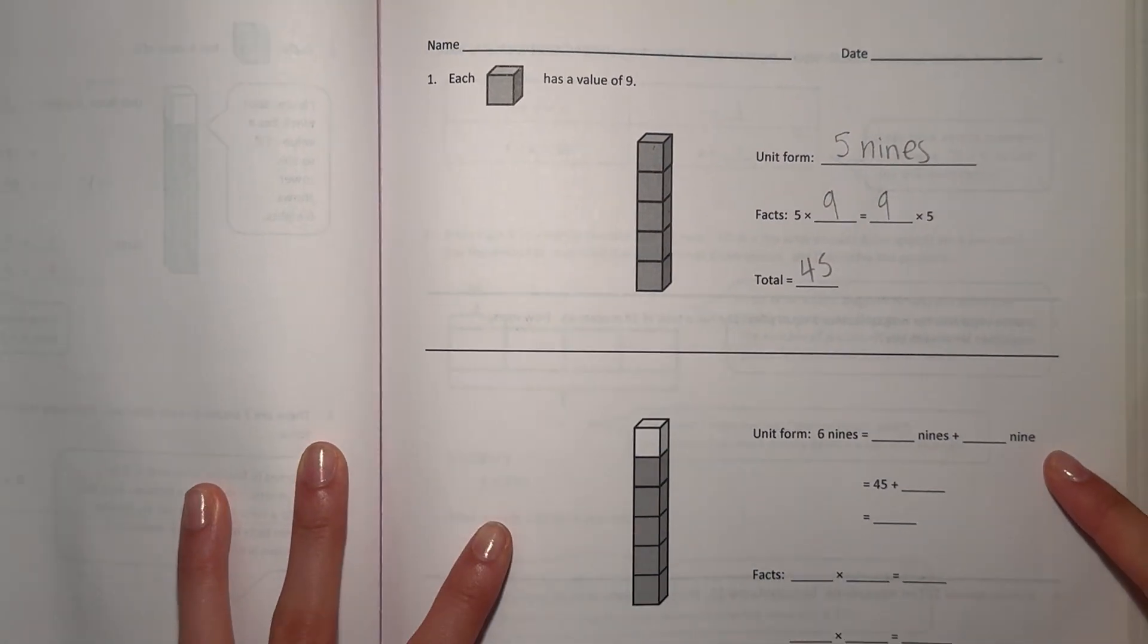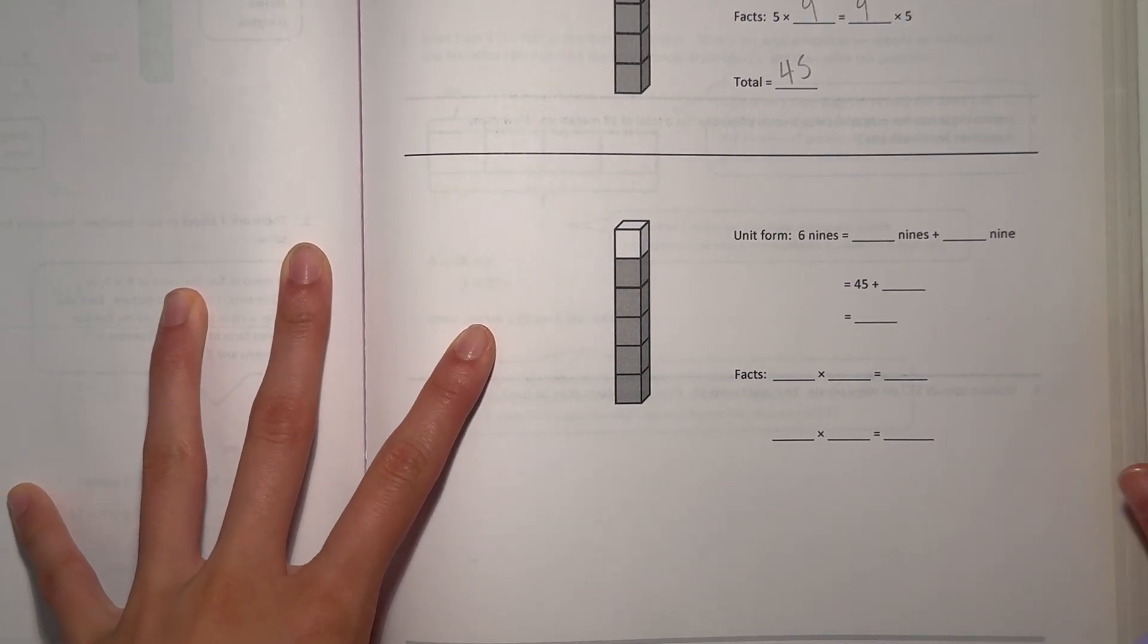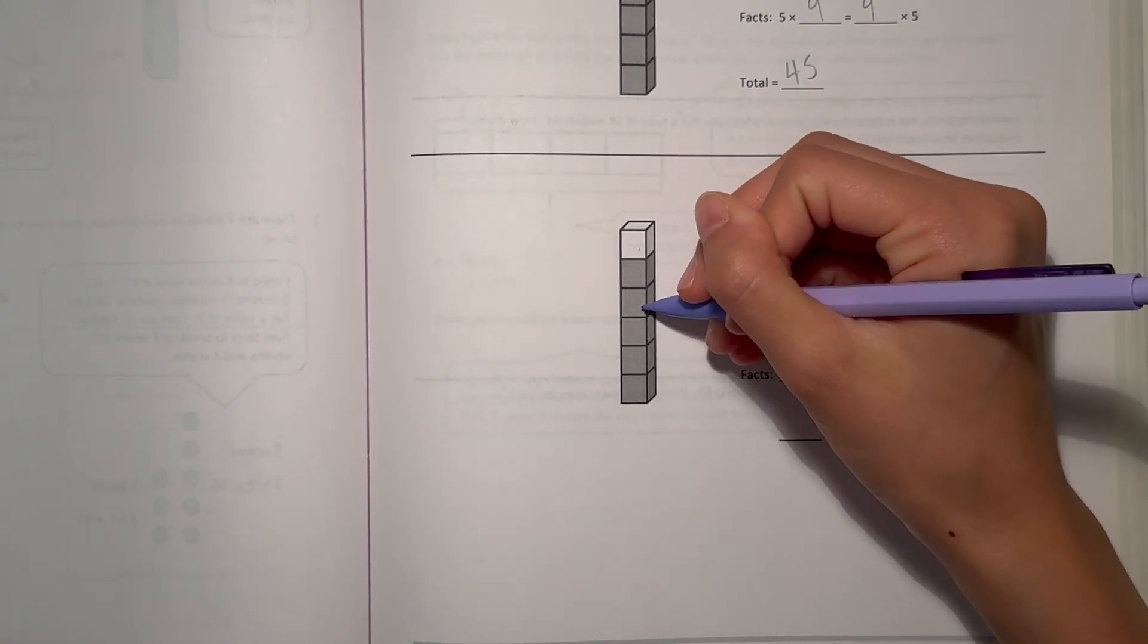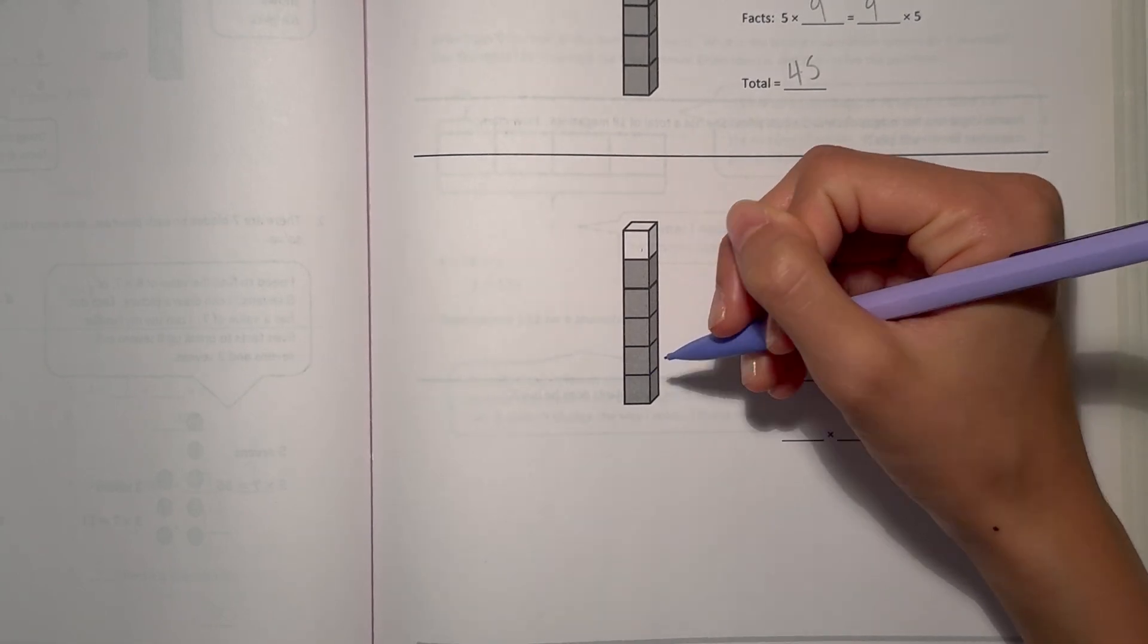Alright, next one. Here we have 1, 2, 3, 4, 5, 6 cubes.